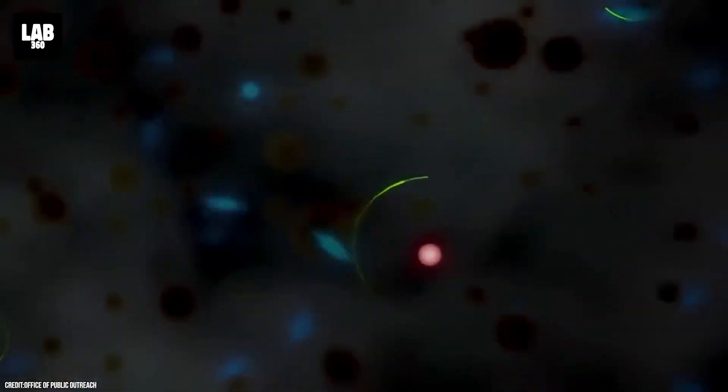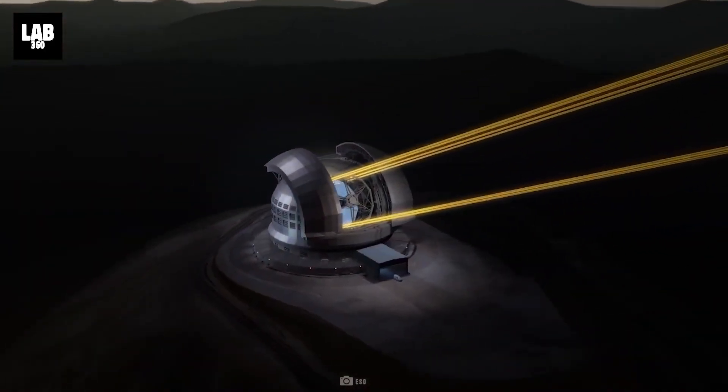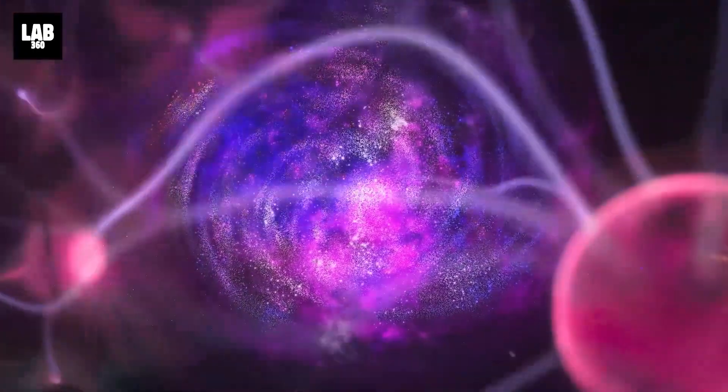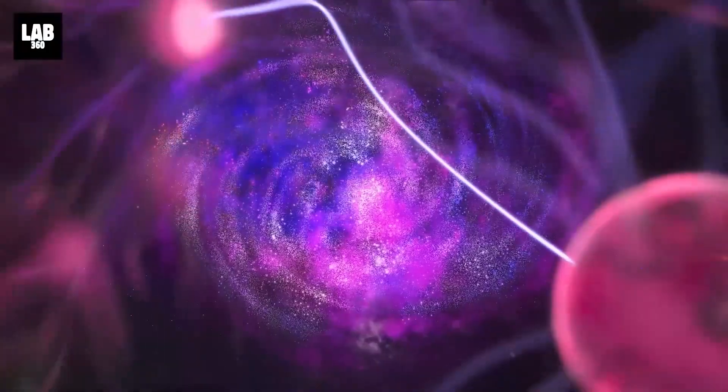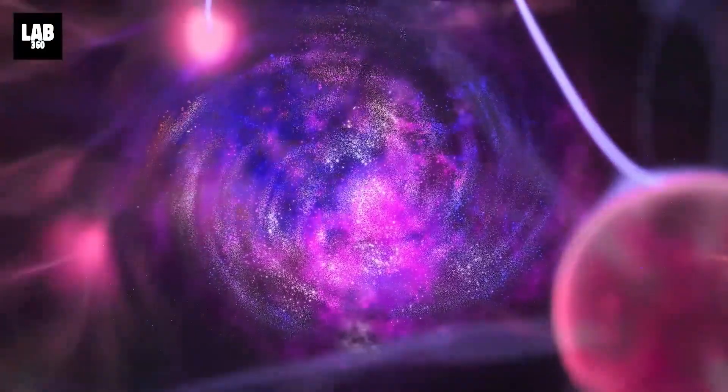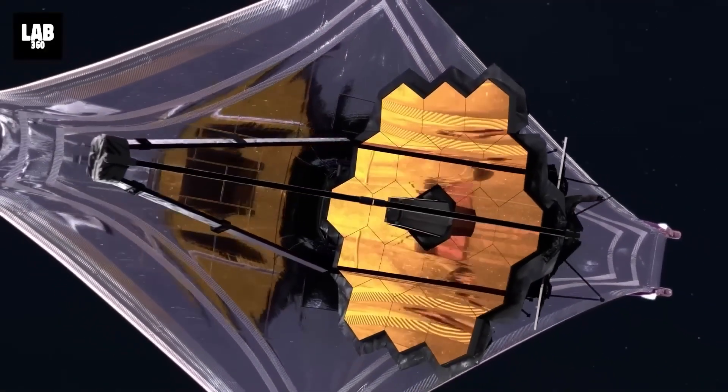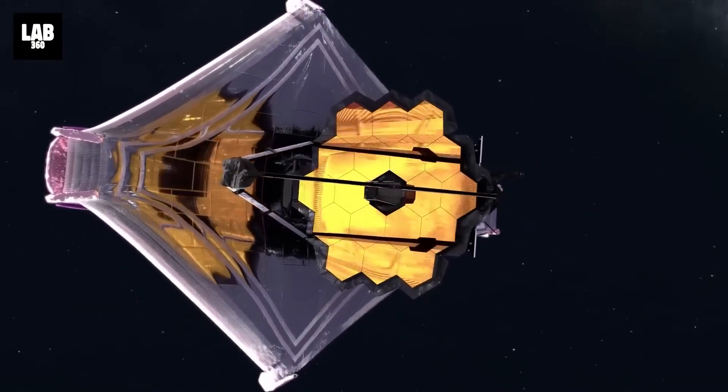In conclusion, the James Webb Space Telescope has ushered in a new era of cosmological inquiry, challenging the Big Bang theory and prompting a re-evaluation of the universe's expansion and structure. Its stunning images and unexpected data have ignited debates that could reshape our understanding of the cosmos. From the Hubble constant to dark energy and S8 tension, the telescope's findings highlight the complexities of the universe and the limitations of our current models. As scientists continue to analyze this wealth of information, they are driven by the promise of uncovering new truths about the universe's past, present, and future. The journey is far from over, but each step forward brings us closer to unraveling the cosmic tapestry that surrounds us.